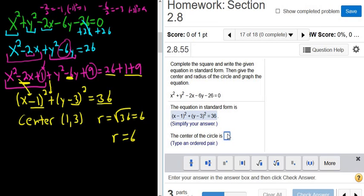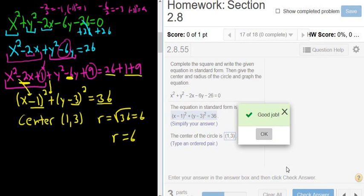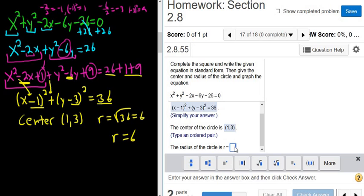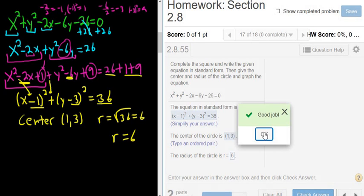The center of the circle, we said that was 1, 3. There we go. I hit shift 9 to hit the parentheses key. I don't use these little keys here. It's too much work having to use your mouse. r is 6. That's our radius. Good job.